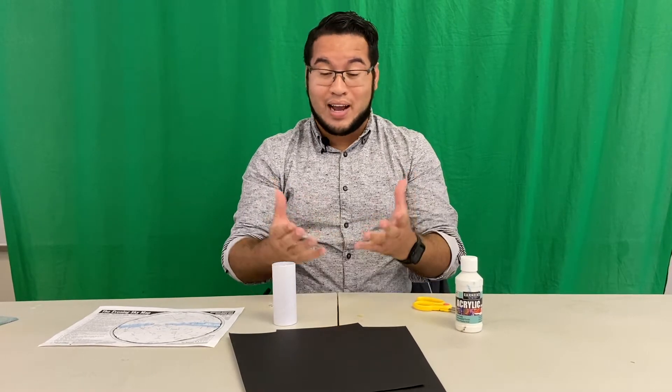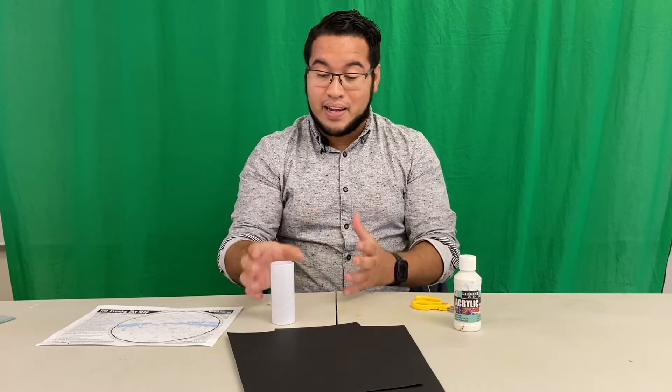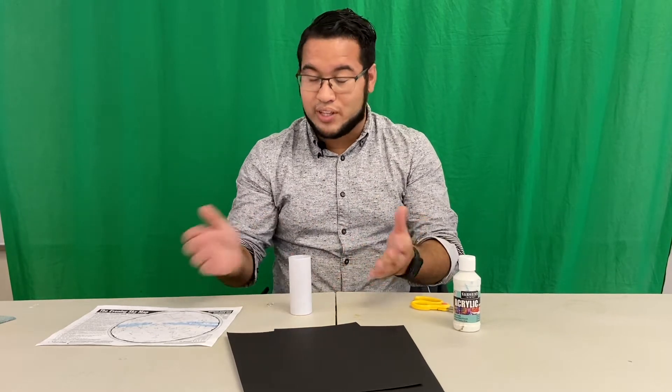Now a constellation is a picture that we make in the night sky by taking the stars and connecting some imaginary lines between them. You guys probably know some really cool constellations at home and we're gonna actually take those constellations and make a cool little craft just using some really common household items. So let's go ahead and get started.